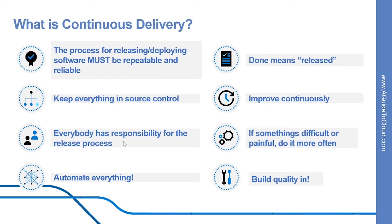Now let's understand what continuous delivery is. Continuous delivery, or CD, is a set of processes, tools and techniques for the rapid, reliable and continuous development and delivery of software. This means that continuous delivery goes beyond the release of software through a pipeline. To understand this more, look at the eight principles of continuous delivery. The first is: the process of releasing and deploying software must be repeatable and reliable. Another principle is: automate everything. Then: if something is difficult or painful, do it more often. And: keep everything in source control. And: done means released.